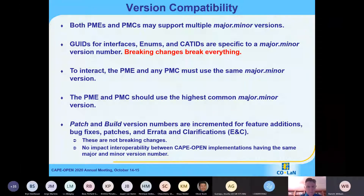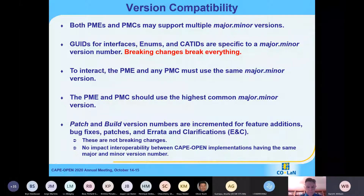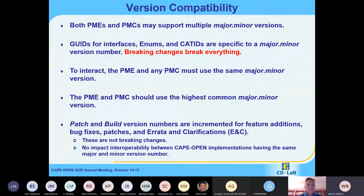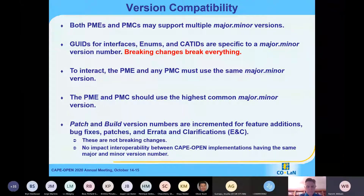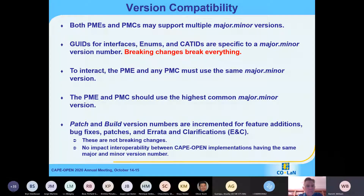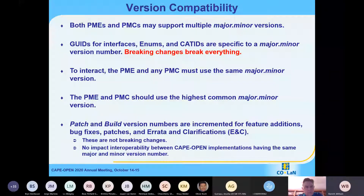The justification for that was that we wanted to make sure that each version worked and we didn't have hidden issues come up with compatibility between different major-minor version number combinations. To interact, the PME and any PMC must use the same major-minor version number. If you have multiple PMCs in a PME, they don't all have to be talking CAPE Open 1.0, 1.1, or 1.2, but each of them has to pick one to use. So one PME to one PMC can be 1.0 to 1.0; another one can be 1.1 to 1.1.